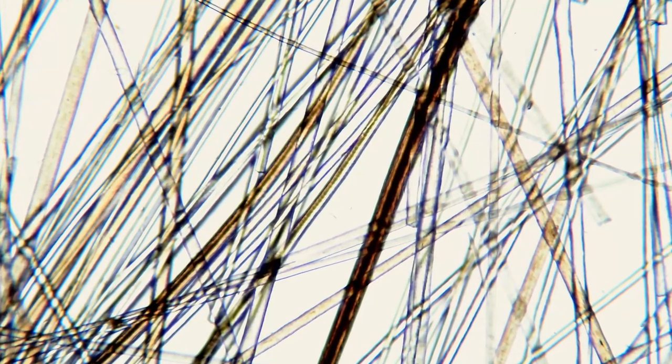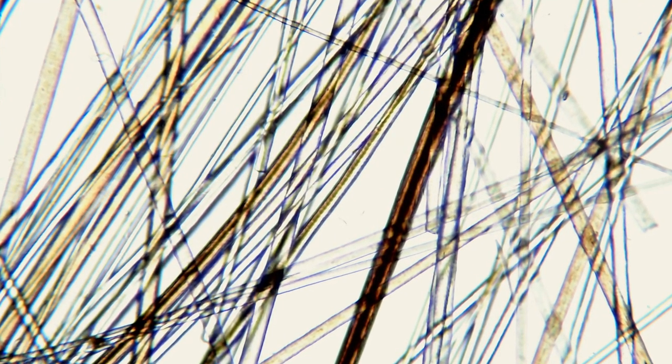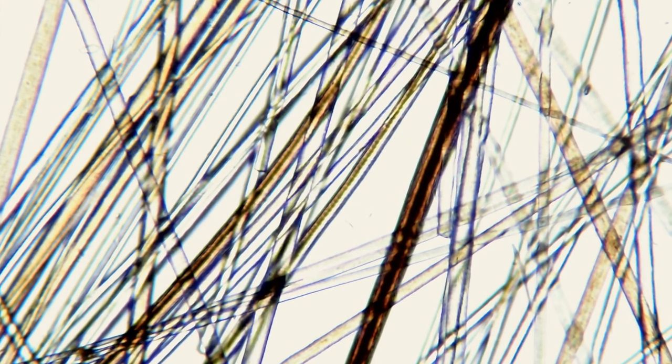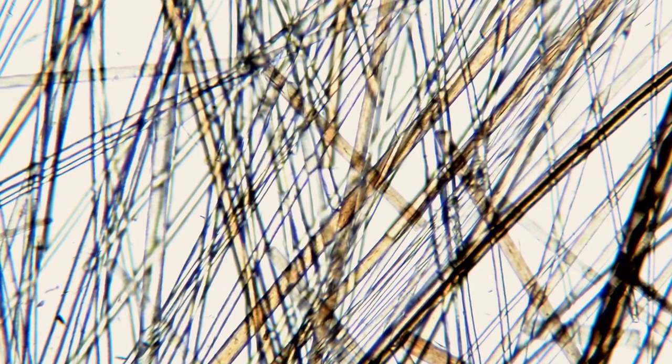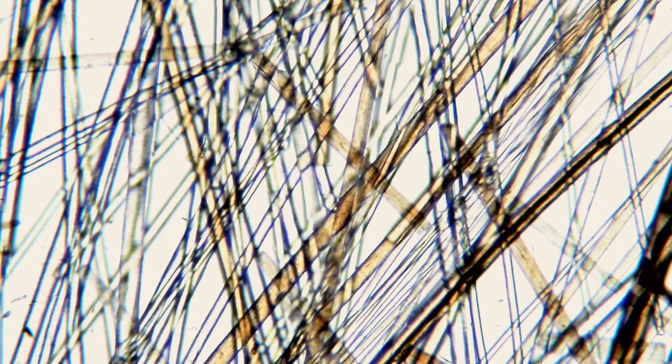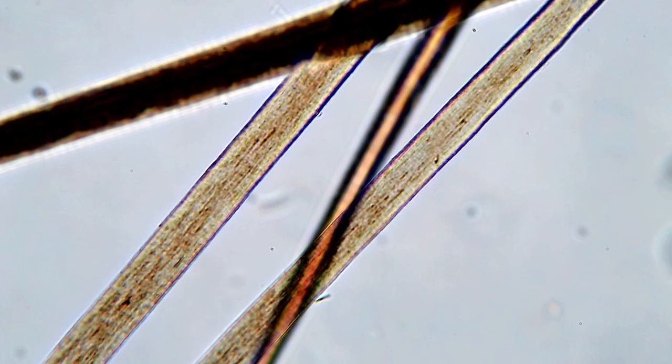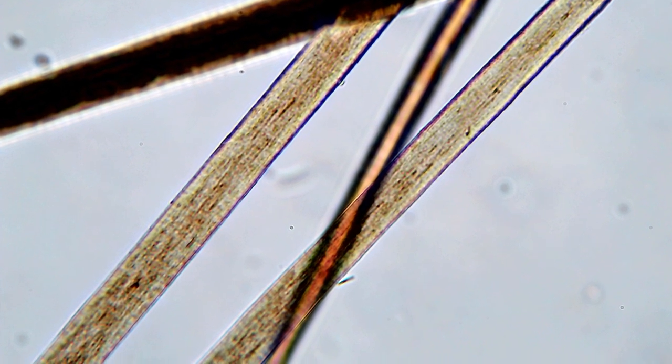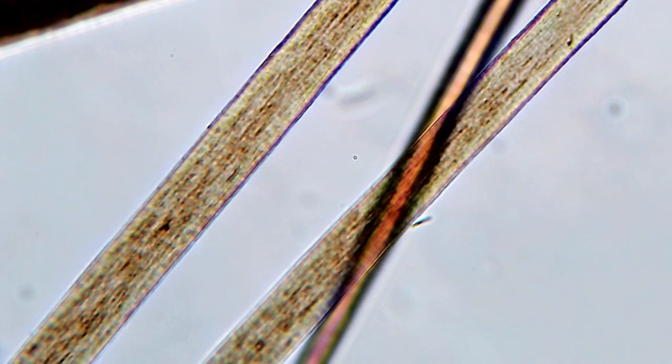And last but not least again a picture within bright field showing very nicely the different colors and the different diameters and thicknesses of the dog specimen fibers. So as you can see microscopy is quite interesting. There are many things that you can see and that's actually quite a nice one. You can see the texture quite well.